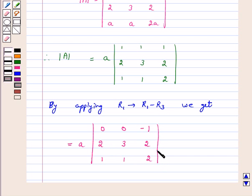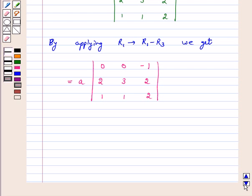Now we will expand along r1. We will get our determinant A is equal to a into 0 minus 0 minus 1 into 2 minus 3, which is equal to a into 1, that is equal to a.